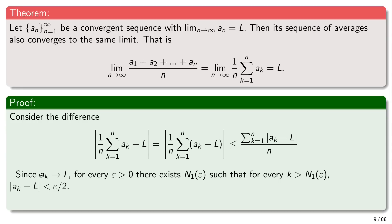Now we use this dummy variable k to indicate the elements of the sequence. Since we know that the sequence A_k converges to the limit L, and k is the dummy variable for summation, by the definition of convergence this means that for every epsilon, I can find an initial number n_1(epsilon) such that for every k greater than n_1(epsilon), the distance between A_k and its limit is smaller than epsilon/2. We'll see why I want to use epsilon/2.